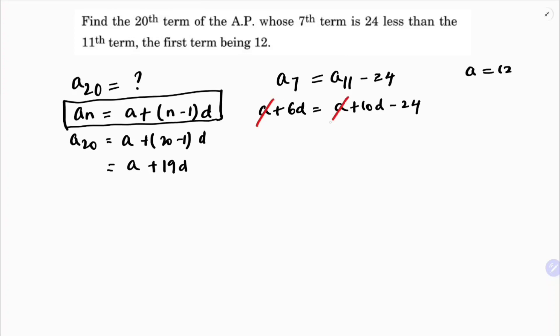Cancel a from both sides, so you're left with 6d. Transposing, 6d - 10d = -24, so -4d = -24. The negatives cancel, so d = 24/4, which means d = 6.